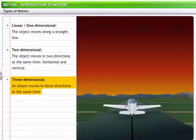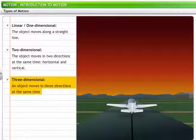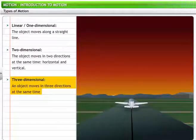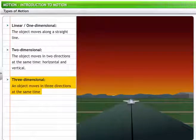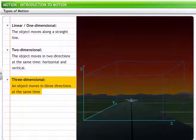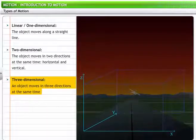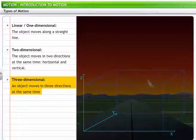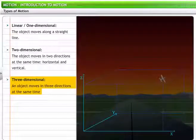If we observe an airplane taking off from a runway, it ascends rapidly in one direction and, after gaining some height, turns towards its flight path. This type of motion, where an object moves in three directions at the same time, is called three-dimensional motion. In this lesson, we will cover motion along a linear path in detail.